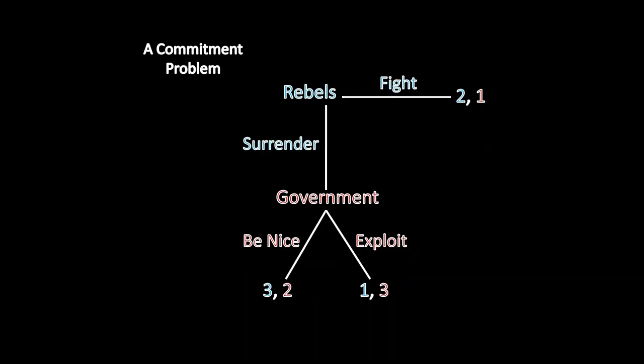We've already seen an example of peacemaking. Think about the critical barrier to civil war settlement. Here we have an ongoing war, and the rebels refuse to surrender because they fear that once they give up their arms, the government will be able to exploit them into the future. A third party can resolve this problem by providing a security guarantee to those rebels — if the rebels give up their arms, the third party assures them that if the government tries to exploit the rebels in the future, the third party will protect them.